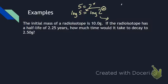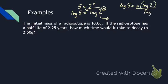So this changes to: log 5 equals x times log 2. If I want to solve for x, I divide both sides by log 2, so x equals log 5 divided by log 2, which is approximately 2.32. We're going to use this same idea — taking the logarithm — whenever we need to solve for an exponent in the half-life equation.